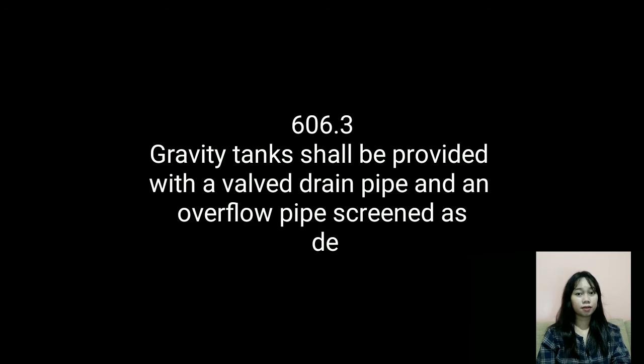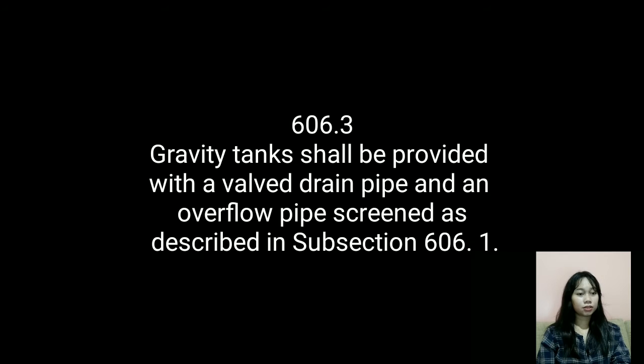In Section 606.3, a gravity tank shall be provided with a valve, drain pipe, and an overflow pipe screened as described in Section 606.1. Section 607 covers water pressure regulators and pressure relief valves.